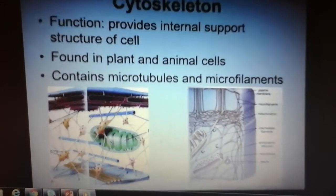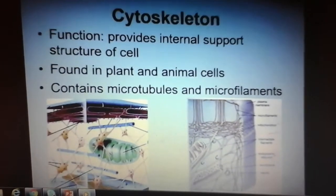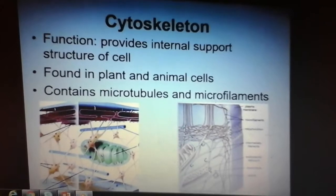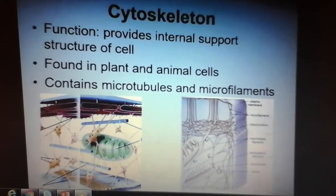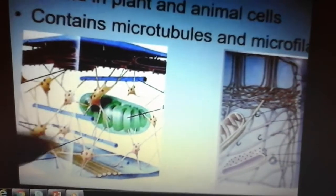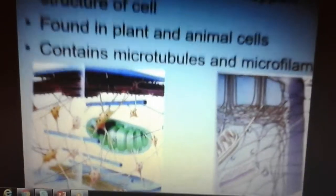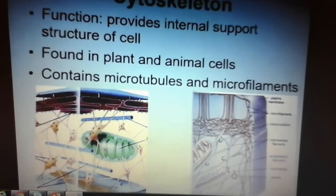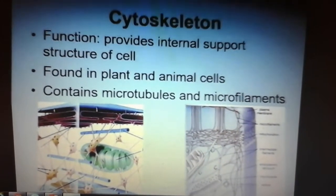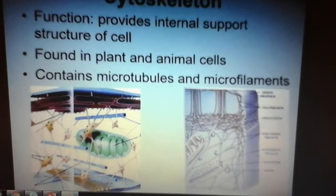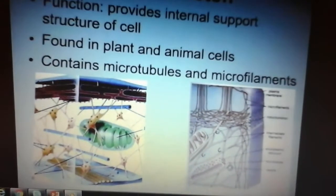We have something called the cytoskeleton. For the cytoskeleton, it's basically like the bones of a cell. You have a skeleton to give you shape, to help hold things together, and to help protect your organs. Your cells also have protein fibers that act like bones — that's what we call your cytoskeleton. For function, it basically is the skeleton of the cell: it gives it shape and helps protect the organelles. It's found in eukaryotes and is made from proteins.